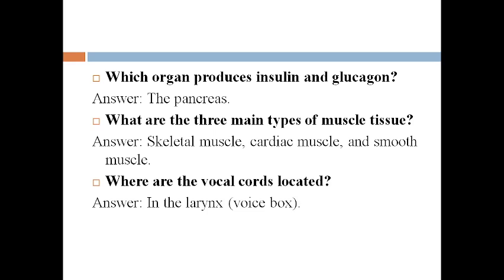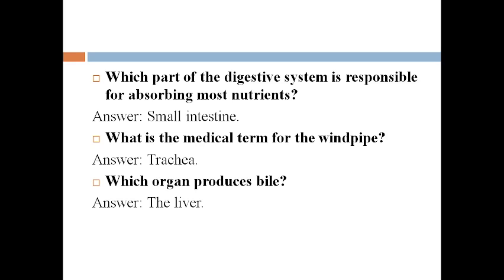Where are the vocal cords located? The vocal cords are otherwise known as the voice box, and they are located in the larynx. Which part of the digestive system is responsible for absorbing most nutrients? The nutrients are absorbed in the small intestine. What is the medical term for the windpipe? The windpipe is otherwise known as the trachea.